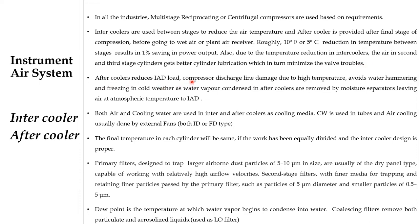The aftercooler reduces the instrument air dryer load. If the aftercooler is not there, the compressor discharge line can be damaged due to high temperature, and it will cause water hammering and freezing in cold weather. As water vapor is condensed in aftercoolers and removed by moisture separators, the air is left at atmospheric temperature before entering the instrument air dryer. So if hot air enters the plant air receiver without an aftercooler, it will damage the discharge line, cause water hammering and freezing. Aftercooler plays a vital role.